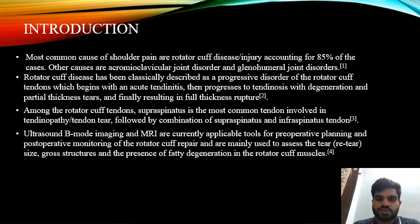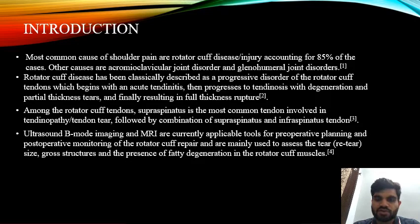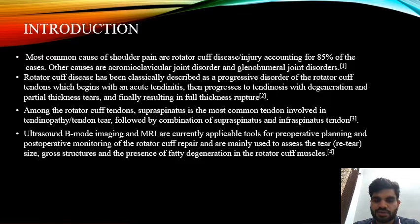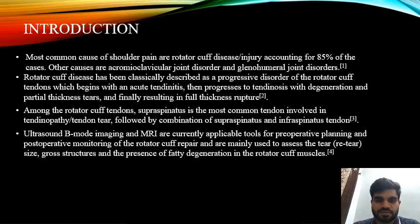Most common cause of shoulder pain are rotator cuff disease, accounting for 85% of the cases. Other causes are acromioclavicular joint disorder and glenohumeral joint disorders. Rotator cuff disease has been classically described as a progressive disorder of the rotator cuff tendons which begins with an acute tendinitis, then progresses to tendinosis with degeneration and partial thickness tear, and finally resulting in full thickness rupture.